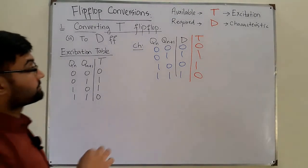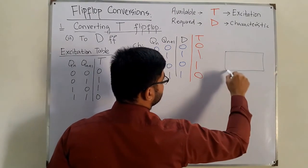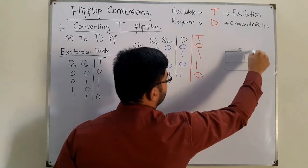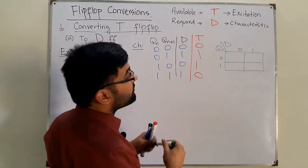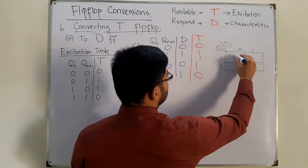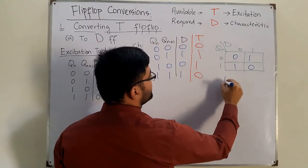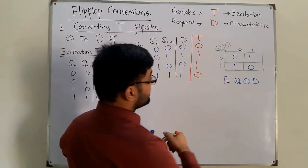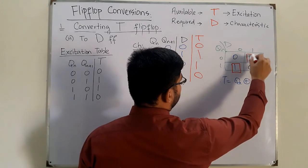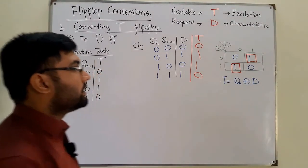Now find the expression for T using a K-map with Qn and D. The K-map values are 0, 1, 1, 0 — there are no groupings possible. This pattern represents the exclusive-OR operation, so T = Qn ⊕ D. This is the odd-ones detector pattern, as seen from the truth table.